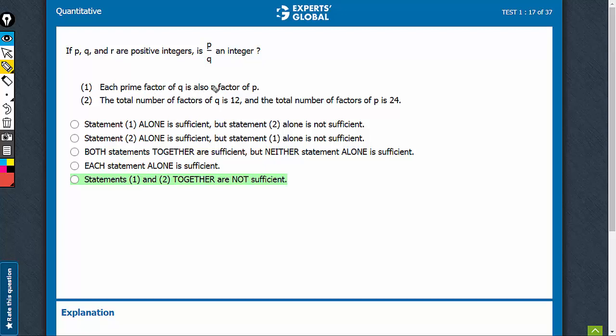Each prime factor of Q is also a factor of P, but we don't know about the powers of these prime factors. For example, P may have a 2 in the numerator, P may have a 2, but Q may have a 2 squared.